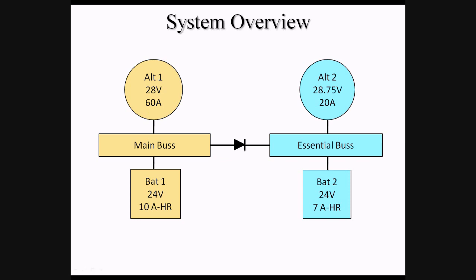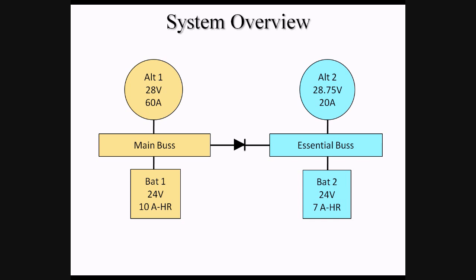Bat-1 is connected to the main bus, where it is normally charged by Alt-1 during flight. Bat-2 is connected to the essential bus, where it is normally charged by Alt-2 during flight.